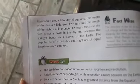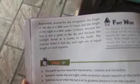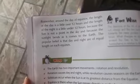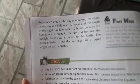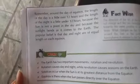When the equinox occurs, the day is a little over 12 hours and the night is a little under 12 hours, because the sun is not a point in the sky and because sunlight bends as it reaches the earth. The popular belief is that day and night are of equal length on each equinox.